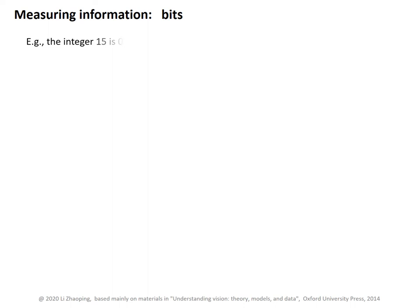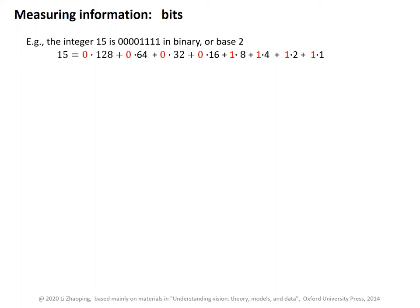Information amount is measured by the unit of bits. Let's illustrate by an example. The integer 15 is 00001111 in binary or base 2, because it is equal to the sum of these eight quantities: 0 times 128, 0 times 64, 0 times 32, etc., to 1 times 1. Therefore, we need eight bits to convey or represent any integer A that is between 0 and 255.